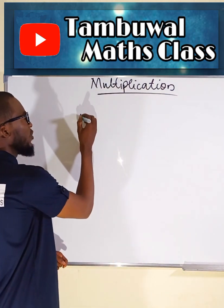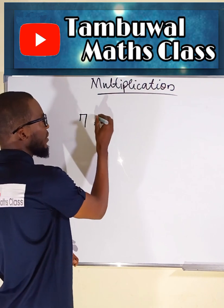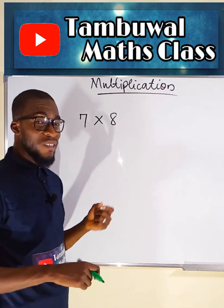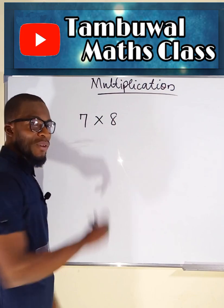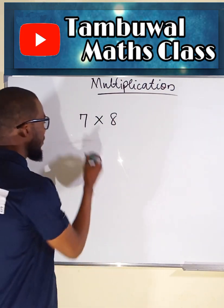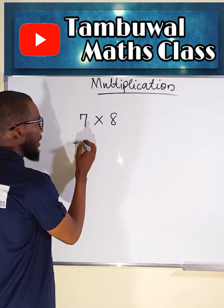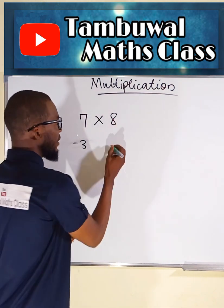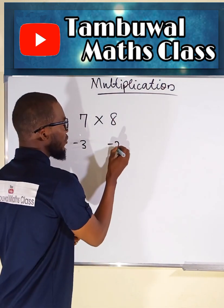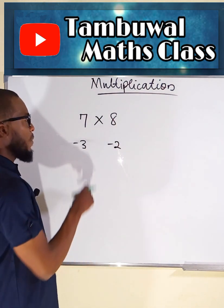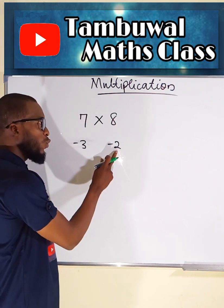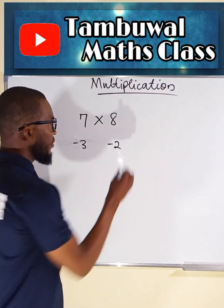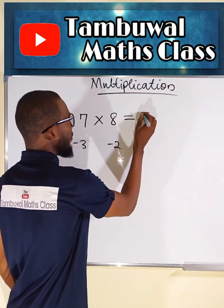If you want to multiply like 7 times 8, this is a multiplication in base 10. 7 is 3 less than 10, so we have negative 3 here, while 8 is 2 less than 10, so we have minus 2 here. Either 7 and negative 2, or 8 and negative 3, will give you the same result — equals 5.